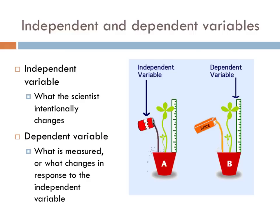By changing just one factor in an experiment, the experimenter can get an idea of exactly what happens in response to that change. If more than one thing is modified at a time, there is no guaranteeing what is responsible for a particular change. The dependent variable is sometimes referred to as the measured variable. The dependent variable, or DV, is what changes in response to the IV, or independent variable, being changed.